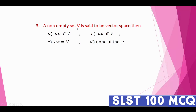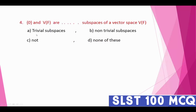Question number three: in a non-empty set V, said to be a vector space, then option A: a·v belongs to V; option B: a·v does not belong to V; option C: a·v equals V; option D: none of these. The correct answer is option A — a·v belongs to V — because of the closure property of vector spaces.